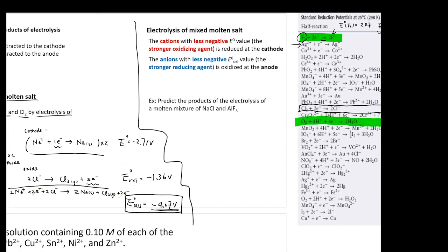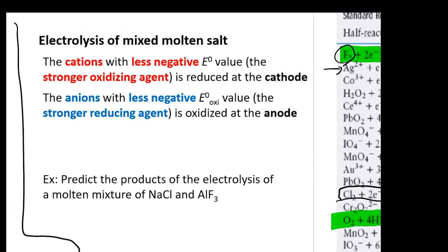The second and third types are more complicated, but the basic principle is similar. In the second type, you have multiple molten salts, meaning multiple different cations and multiple different anions. You will be asked which cation forms first at the lowest voltage, and which anion forms at the anode. The rule is: the cation with the less negative E° value will get reduced first. Similarly, the anion with the less negative E° oxidation value will get oxidized first.